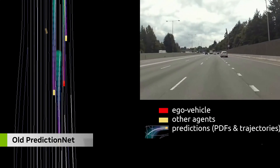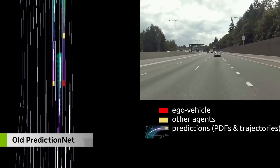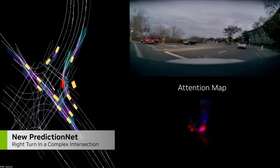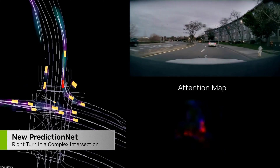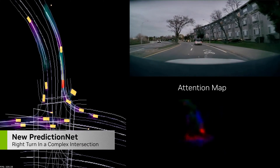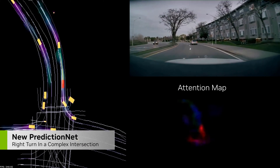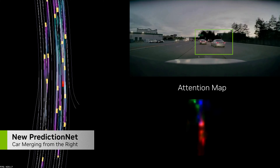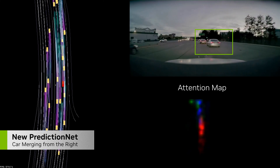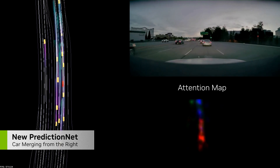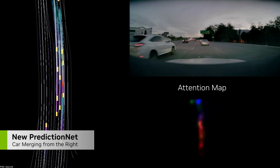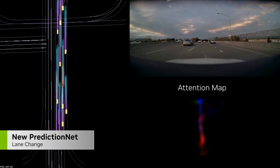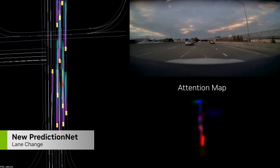The new prediction DNN is trained using a transformer model — the same technology at the foundation of ChatGPT. This model attends to traffic agent interactions, different scenes, and map elements, improving its future behavior predictions.